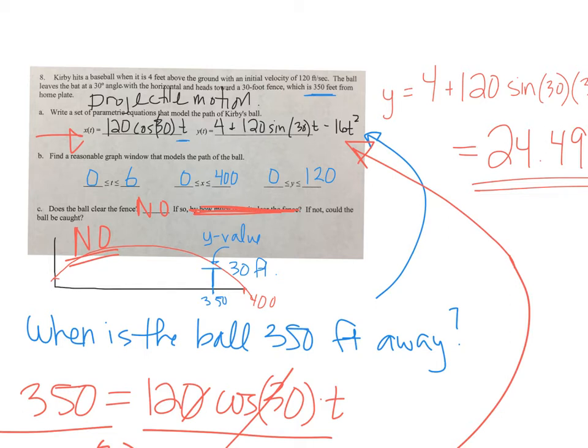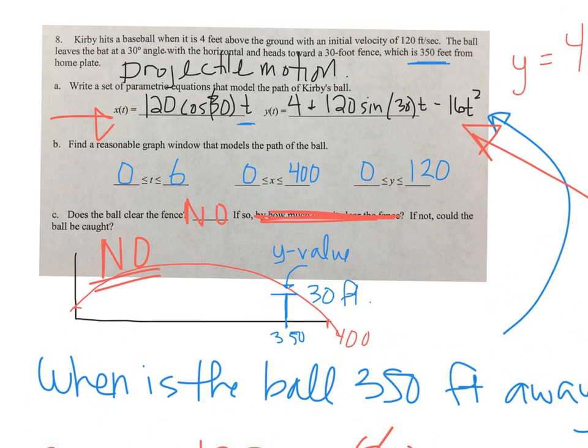So figure out the time when the ball is that far away, and then plug it into your y equation to see what the height is at that same time.